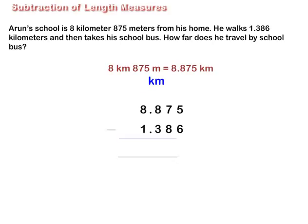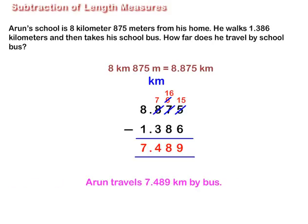Now arrange the numbers in column such that the greater number is above the smaller number. Decompose and subtract the numbers. Thus, Arun travels 7.489 km by bus.